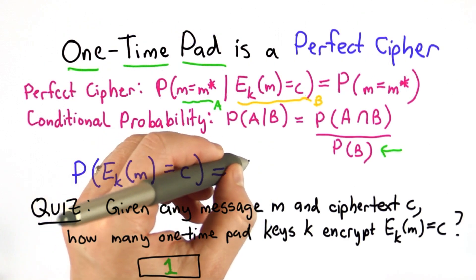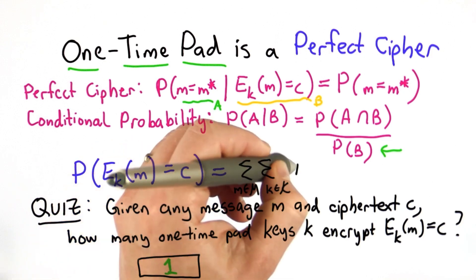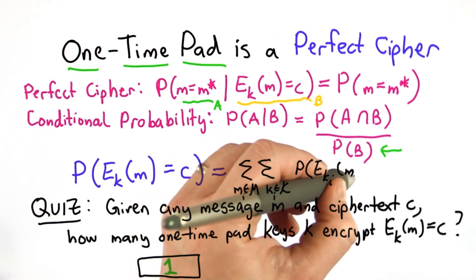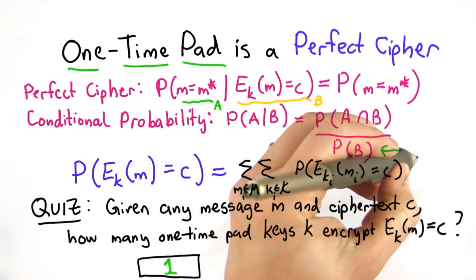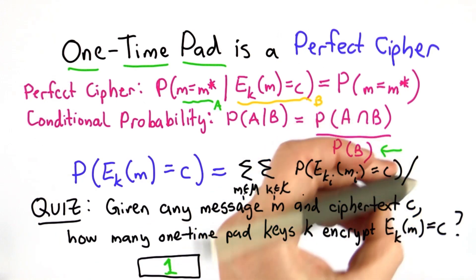So that means we can compute this probability, summing over all the messages, summing over all the keys, where we've got the probability that that key encrypts that message to the given ciphertext. And we need to divide this by the space, which is the size of the messages times the size of the keys.